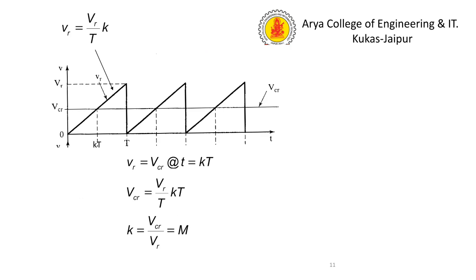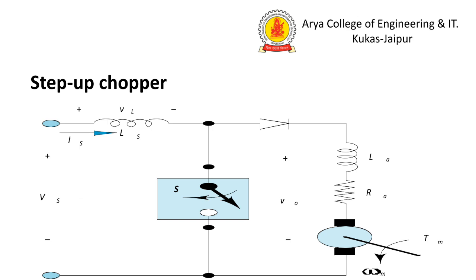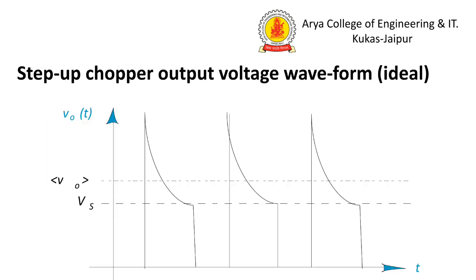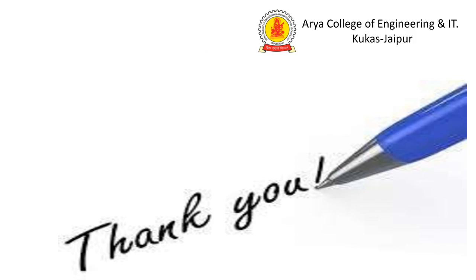In a step-up chopper, a diode and inductor are used. The step-up chopper produces an output voltage higher than the source. Thank you.